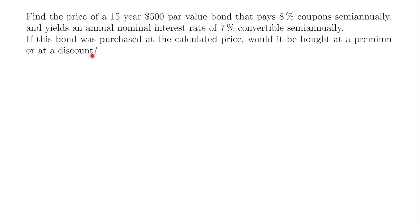Welcome back. Let's start with this example. We want to find the price of a 15-year $500 par value bond that pays 8% coupon semi-annually and yields an annual nominal interest rate of 7% convertible semi-annually.